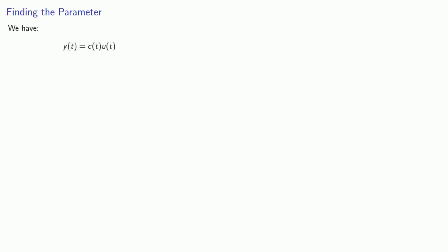So we have y(t) = c(t)·u(t). And since our differential equation requires a derivative, let's go ahead and differentiate. We'll substitute these values into our differential equation.